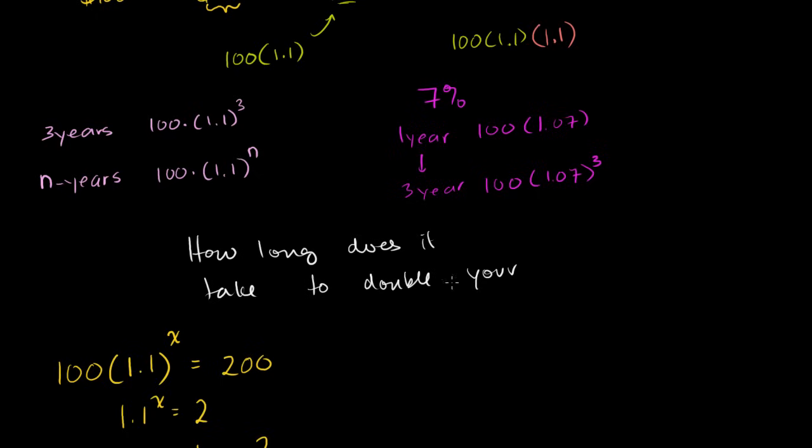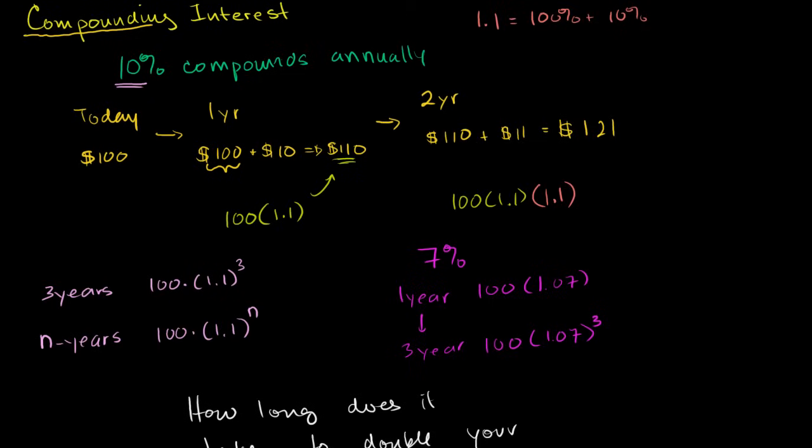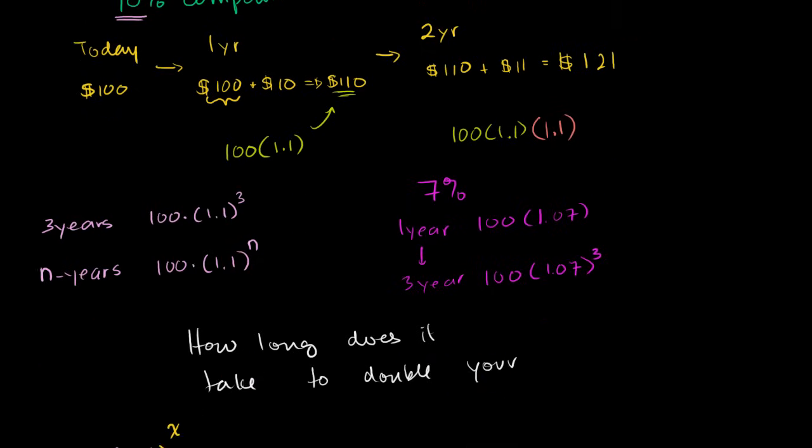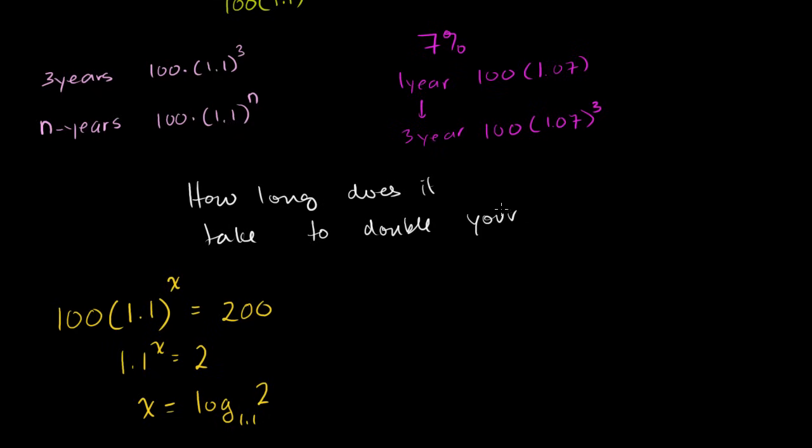So what I'm going to do in the next video is I'm going to explain something called the rule of 72, which is an approximate way to figure out how long to answer this question. How long does it take to double your money? And we'll see how good of an approximation it is in that next video.